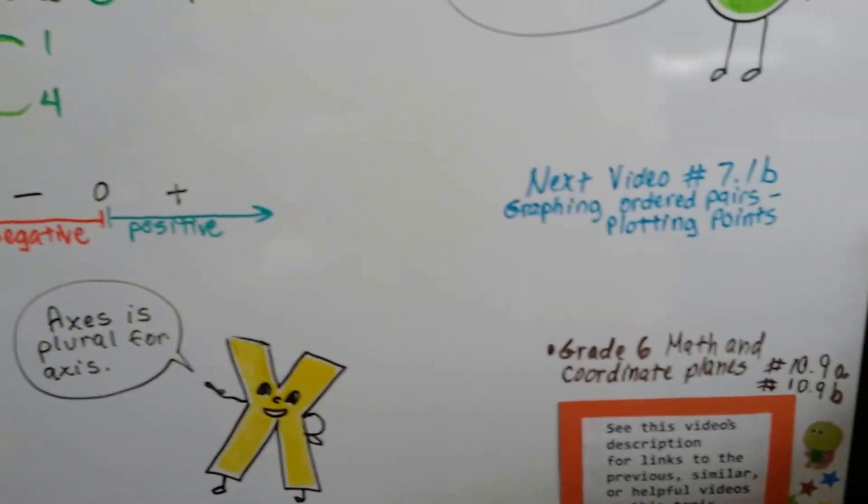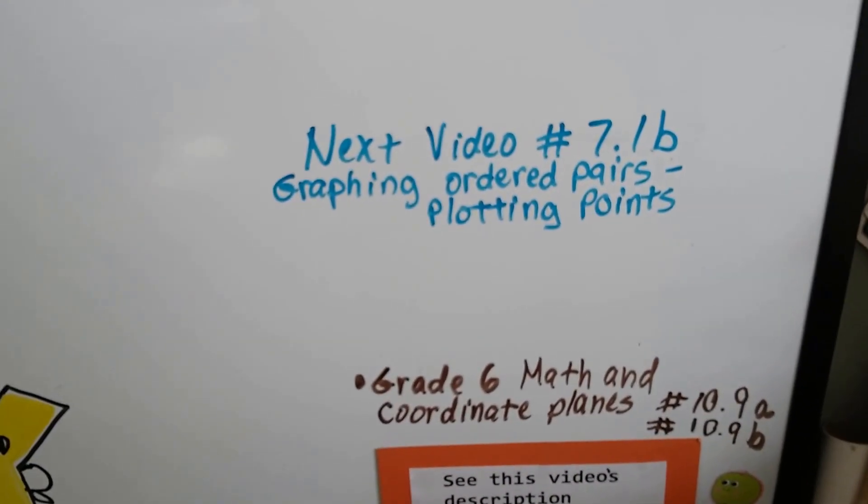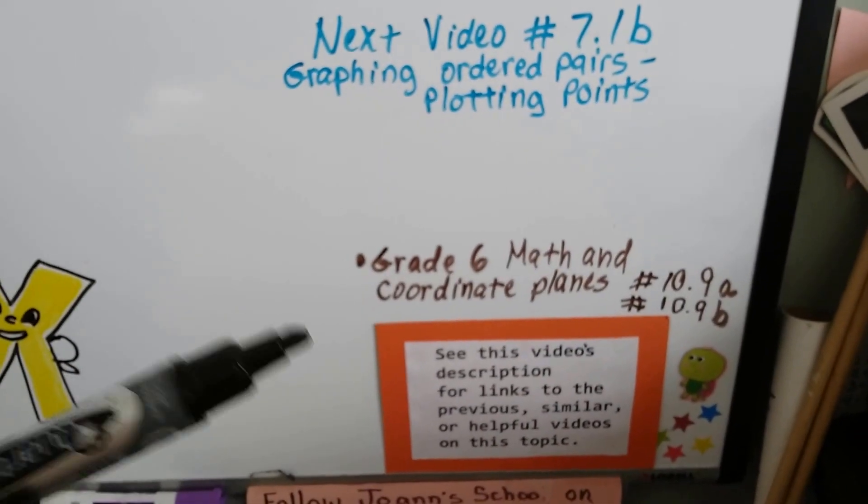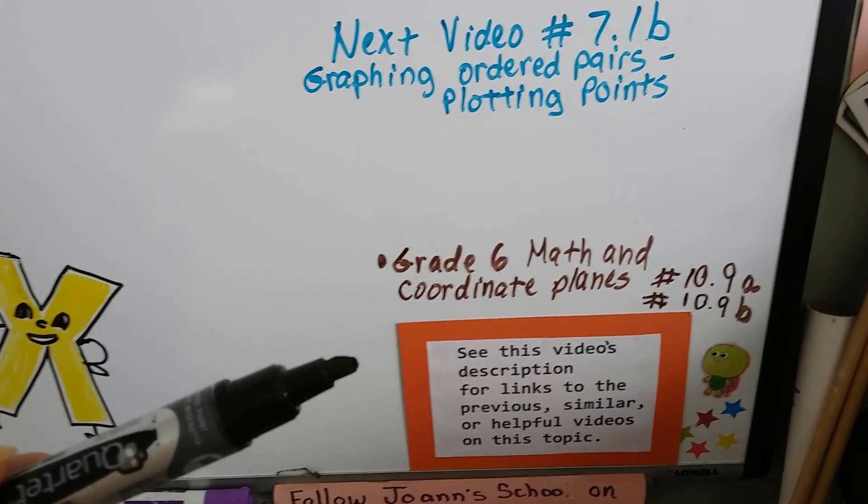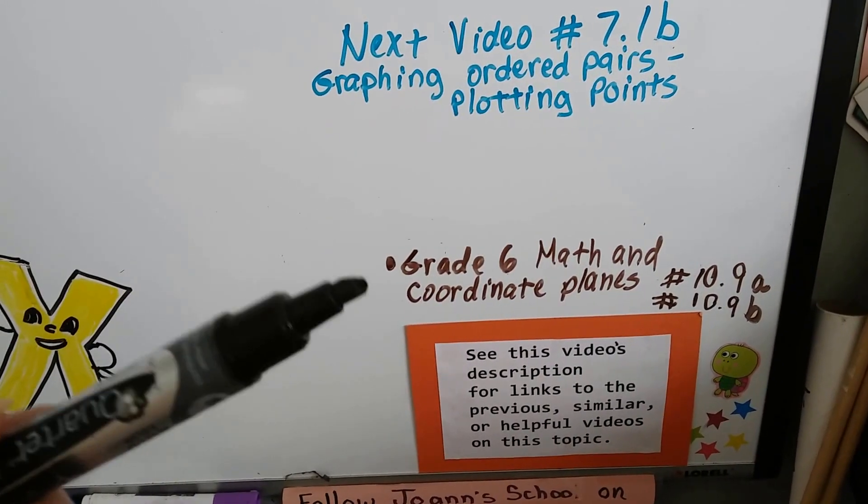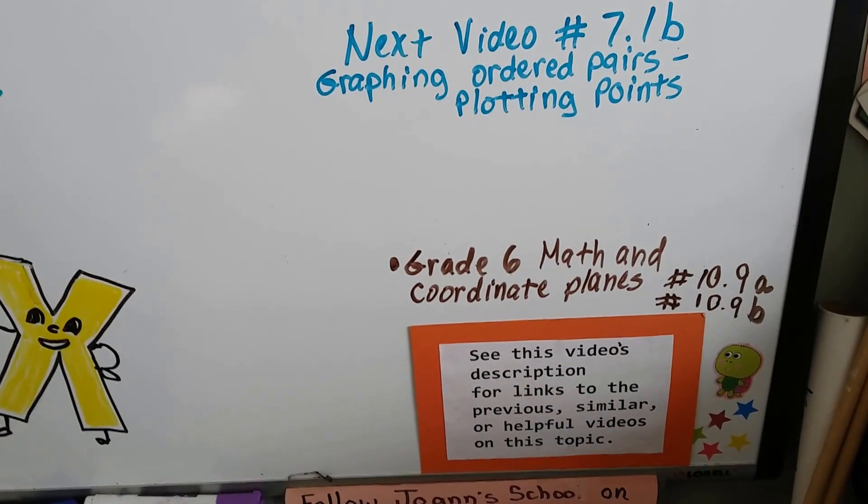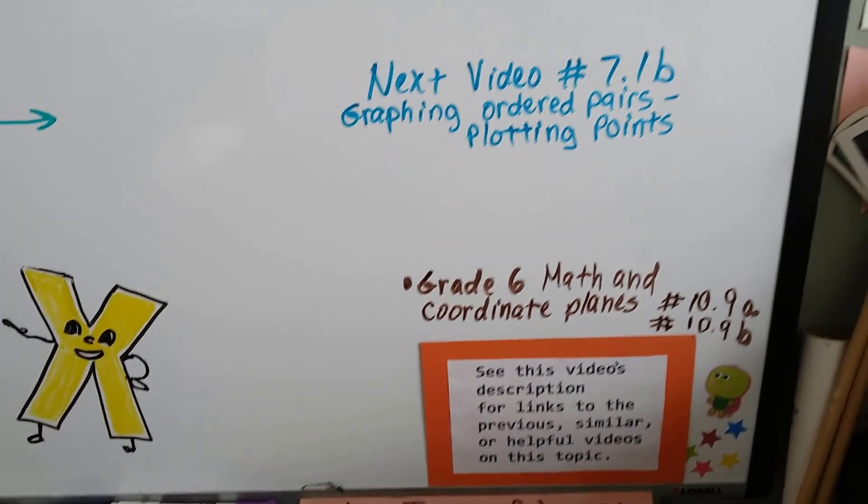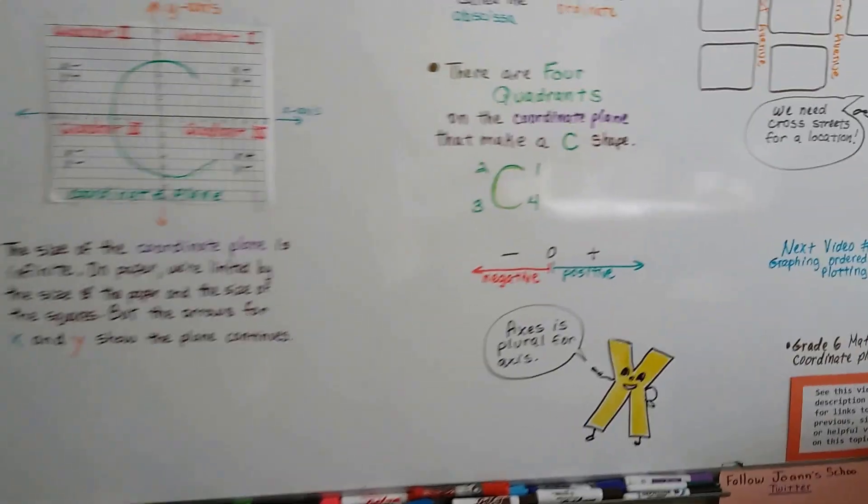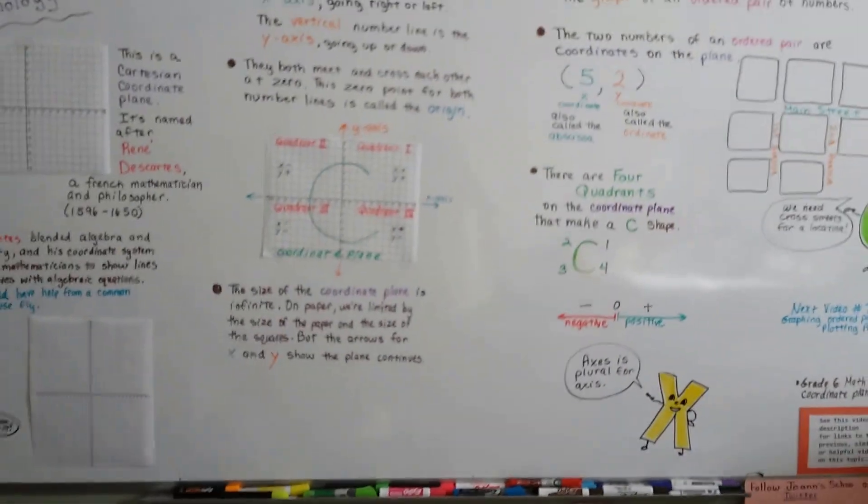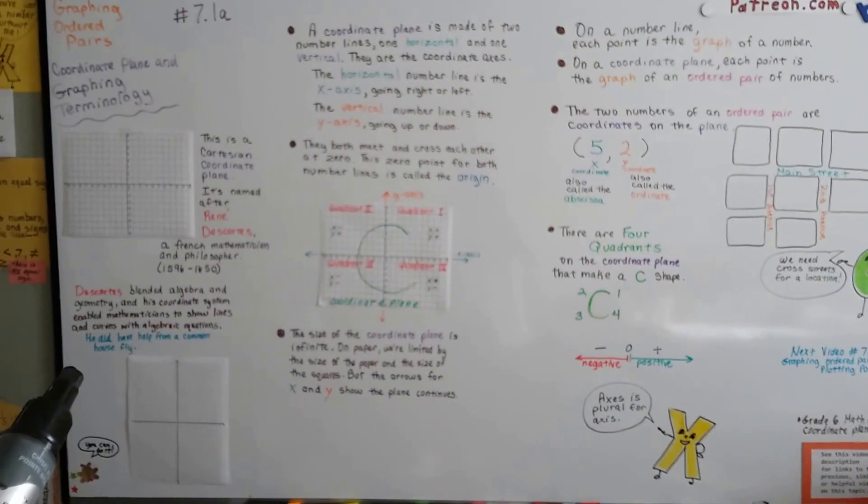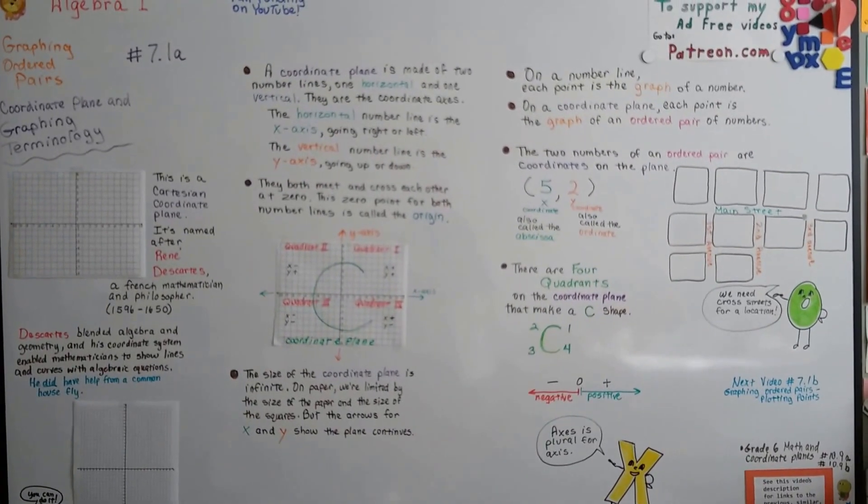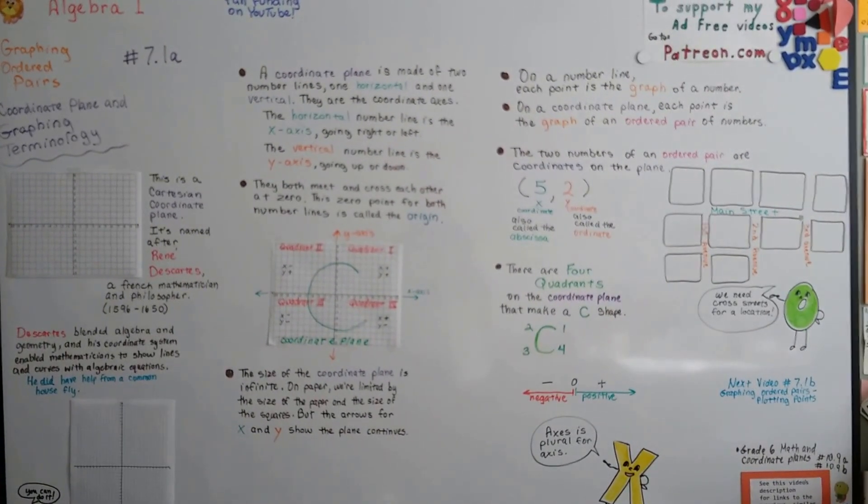Our next video is going to be 7.1b, and we're going to actually graph ordered pairs. We're going to plot some points. That's what it's called, plotting points. Now, I made a similar video about coordinate planes for grade 6, and you might want to watch that one too. It's not that much different than this one, but it might give you a little more information. I'll have links to those videos in this description. I'll see you in 7.1b. You might even want to go on YouTube and look up René Descartes and the housefly, and find out the story about how he was laying in bed and watched a fly crawling around. I'll see you. Bye.